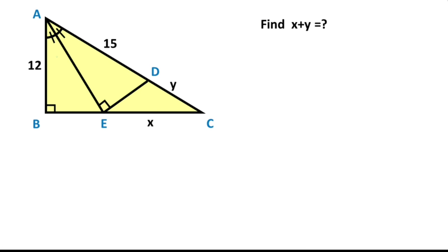First step, let's call these two equal angles alpha and here theta. If you notice that alpha plus theta equals 90 degrees, that means here must be equal to theta and here must be equal to alpha.